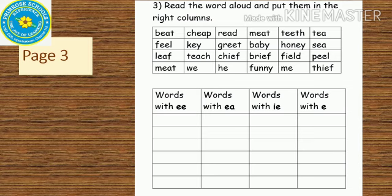So, you have to write the words with the sound E with different spellings in the corresponding columns. Words with the spelling E-E go under the first column. Words with E-A go in the second column. Words with I-E go in the third column. And words with E go in the fourth column. These are the answers for your reference.